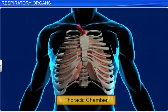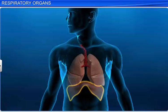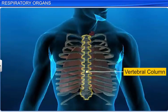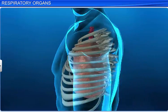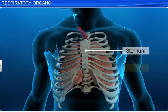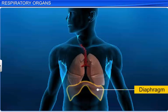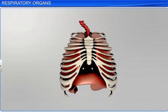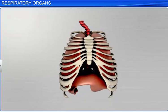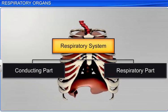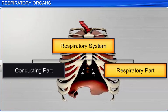The lungs are situated in the airtight thoracic chamber. A thick membranous structure below the lungs separates the thoracic cavity from the abdominal cavity. It is called the diaphragm. The thoracic chamber is supported by the vertebral column dorsally, by the sternum ventrally, by the ribs laterally, and is formed by the dome-shaped diaphragm on the lower side. The lungs and the thorax are arranged so that any change in the volume of the thoracic cavity reflects on the lung cavity, or pulmonary cavity. Based on function, the respiratory system is divided into two parts: the conducting part, and the respiratory part.